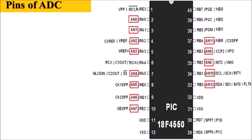These are the pins of the PIC 18F4550 microcontroller where we can connect analog inputs. There are 13 pins: AN0 is channel 0, AN1 is channel 1, AN2 is channel 2, then channels 3, 4, 5, 6, 7, 8, 9, 10, 11, and channel 12.